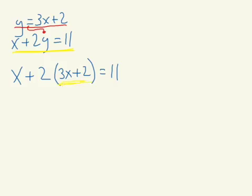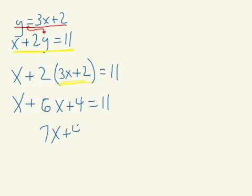Okay, now I have an equation with one unknown, and that's really what we're trying to get to. We can now solve for the x, and when we get x, we can get y pretty quickly. So x, let's distribute, and we'll get 6x plus 4 equals 11, or 7x plus 4 equals 11. Subtract 4 on both sides, and we get 7x equals 7, and therefore x is 1. That one's done.